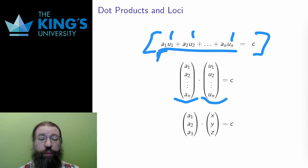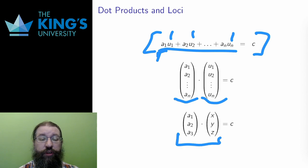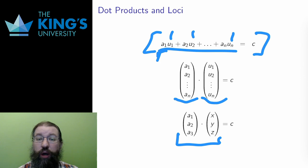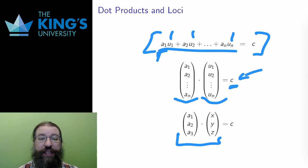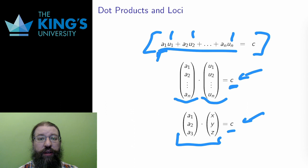And if you prefer to think of it this way, here is the R3 version as well. What the equation says is that the dot product of a vector u with some fixed vector of constants a must be equal to some constant c. I can interpret any linear equation this way, as specifying a particular dot product.